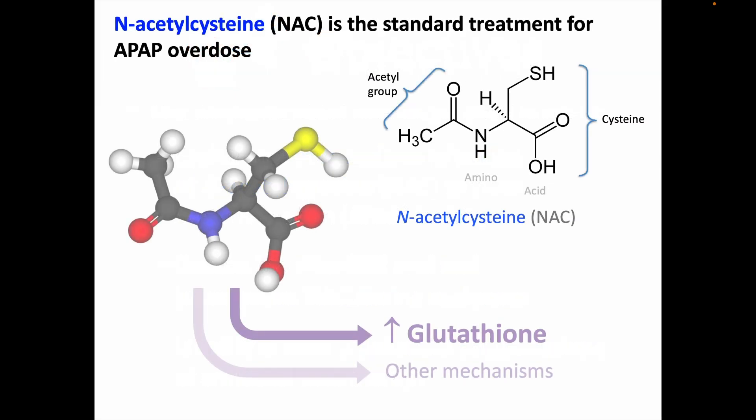As already mentioned in our discussion about acetaminophen, N-acetylcysteine is the standard therapy for acetaminophen overdose. N-acetylcysteine is just a minor modification of cysteine, the essential amino acid, where there is an addition of an acetyl group to the nitrogen, or N, of the amino group, hence its N-acetylcysteine, commonly abbreviated as NAC. And it works primarily by replenishing glutathione stores, but there are other mechanisms of action as well.